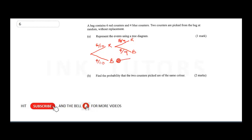Continuing the tree diagram: if he picked a blue second, the probability is four over nine. The red remaining is still five, so red second is five over nine. If he picked blue first, then blue second would be three over nine.